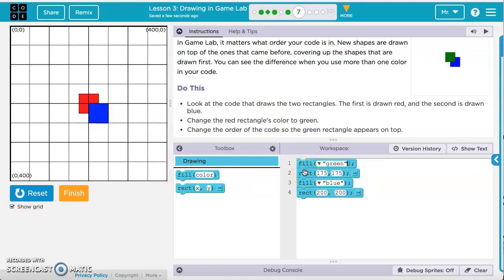Now what we'll need to do in order to change the order is we'll need to take this fill green and take it and drop it below the blue rectangle, and also grab the RECT command so that we can actually draw that rectangle green afterwards. So if we go ahead and reset it and run it, now green is showing on top of the blue.